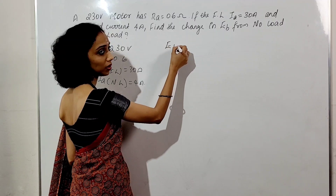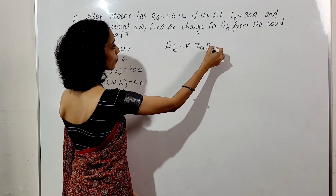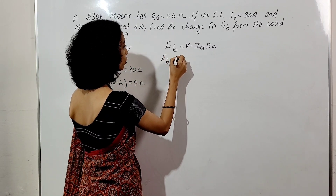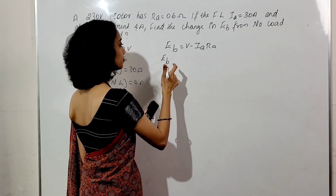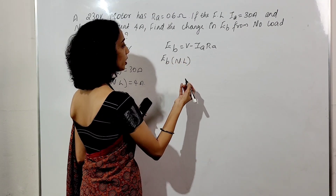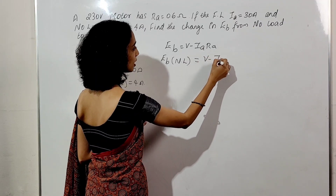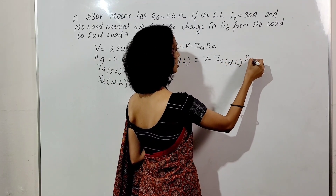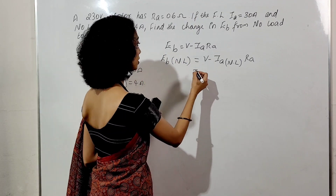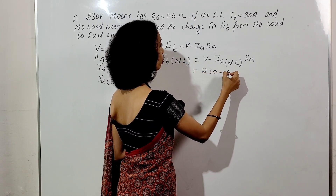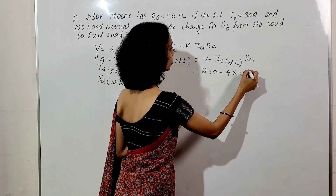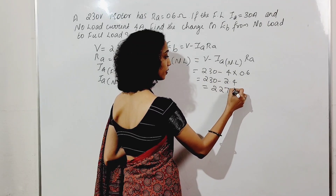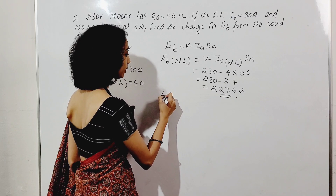Given data: V is 230 V, RA is 0.6 ohm, full load IA is 30 A, no load IA is 4 A. Back EMF equation: EB equals V minus IA*RA. At no load: EB no load equals 230 minus 4 into 0.6, which is 230 minus 2.4, giving 227.6 volts.